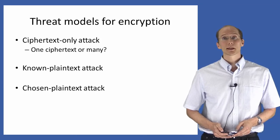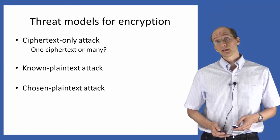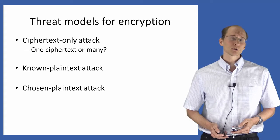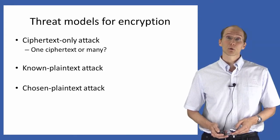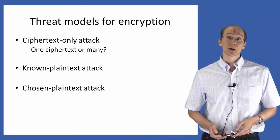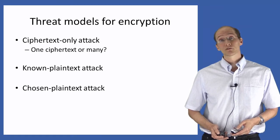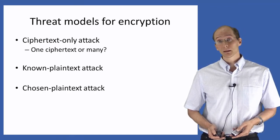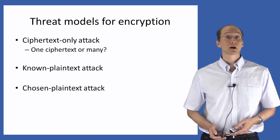An even stronger threat model is a chosen plaintext attack. The attacker will again observe one or more ciphertexts whose underlying plaintext is unknown, but in addition, the attacker is now assumed to be able to obtain ciphertexts encrypted using the same key, corresponding to plaintexts of the attacker's choice. This may really seem unreasonable, but there are many natural scenarios where some form of chosen plaintext attack is possible. Actions of an attacker might influence the messages the parties send, even if the attacker can't control them completely. In other cases, the attacker might have complete control over what gets encrypted — for example, an attacker typing at a terminal where anything typed gets encrypted using a key unknown to the attacker.